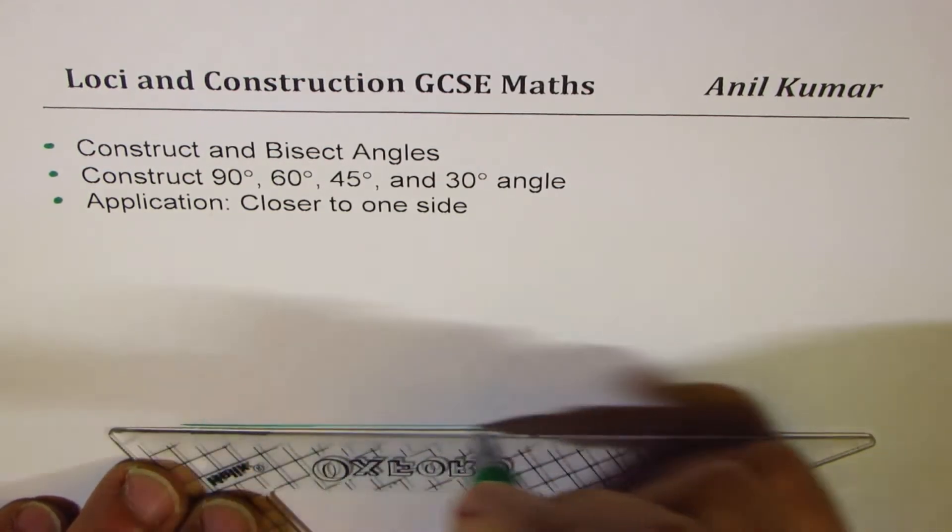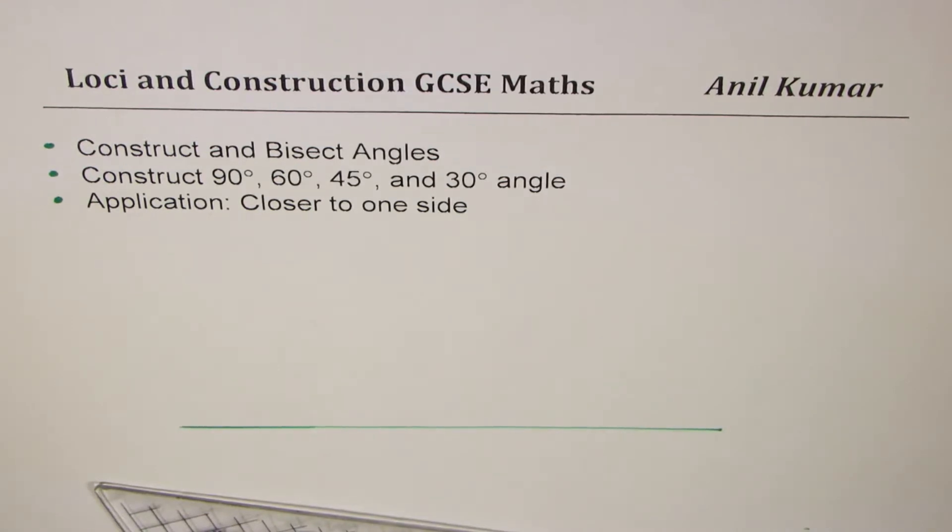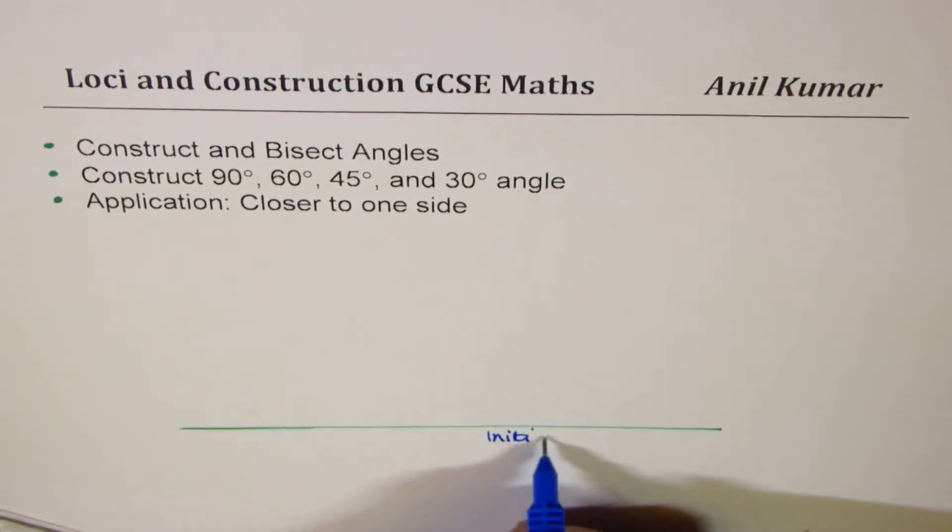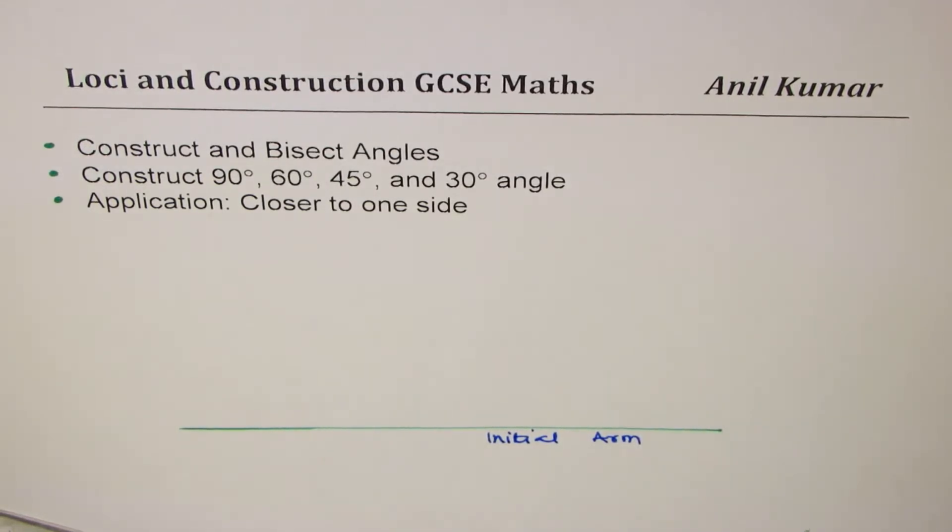To begin with, let me just sketch a line. This is a line to work with. Now we will construct angles taking this as our initial arm. Somewhere along this line we'll write our initial arm. As you know, angles have two arms with a vertex. Now, first exercise is how to construct 90 degrees angle. So let us mark a point on which we should be constructing an angle of 90 degrees. Let this point be O for us.